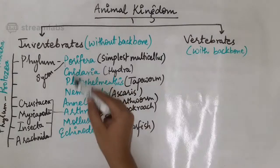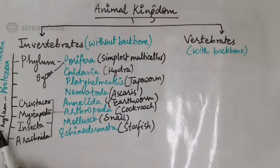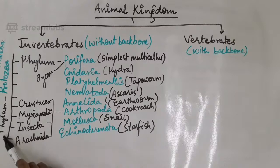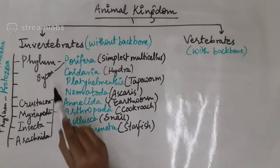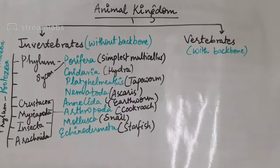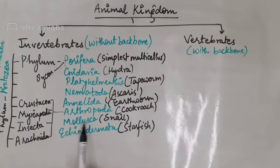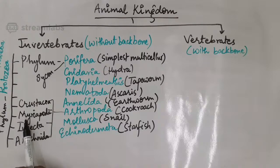So we have nine phylums for invertebrates: starting from unicellular Protozoa (amoeba), then Porifera (sycon), Cnidaria (hydra), Platyhelminthes (tapeworm), Nematoda (ascaris), Annelida (earthworm), Arthropoda (cockroach) with four subclasses — Crustacea, Myriapoda, Insecta, Arachnida — then Mollusca (snail), and Echinodermata (starfish).